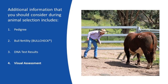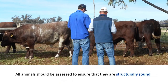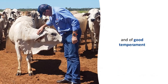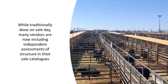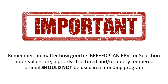4. Visual Assessment — all animals should be assessed to ensure that they are structurally sound and of good temperament. While traditionally done on sale day, many vendors are now including independent assessments of structure in their sale catalogues. Remember, no matter how good its breed plan EBVs or selection index values are, a poorly structured and/or poorly tempered animal should not be used in a breeding program.